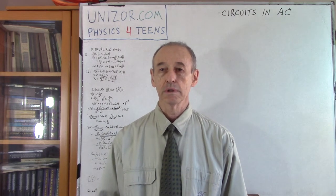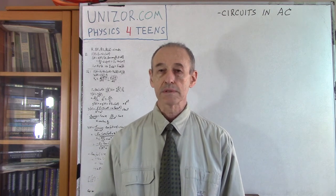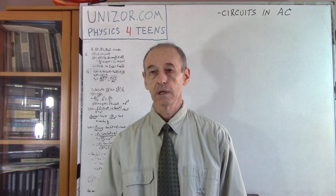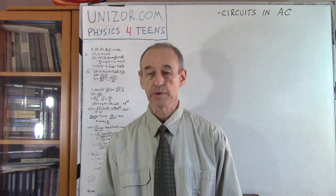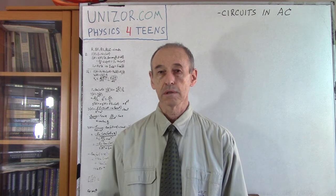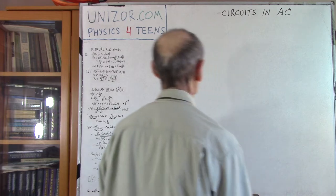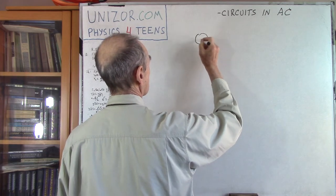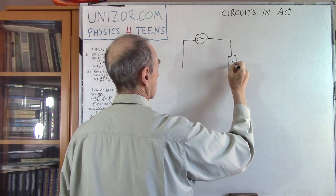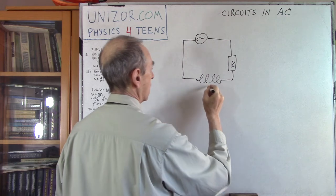I would like to continue talking about alternating current in different circuits. The previous lecture was about circuits which contain a resistor — that's one part — and then resistor and capacitor, that was the second part of the previous lecture. Now, in this lecture, instead of a capacitor, I will consider an inductor. So, let's consider we have a circuit which contains the generator of alternating current, resistor, and inductor.